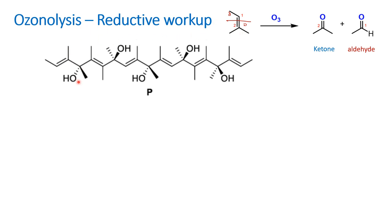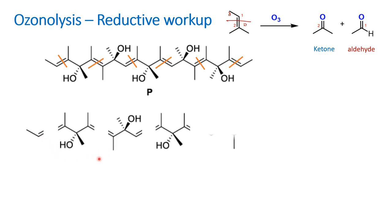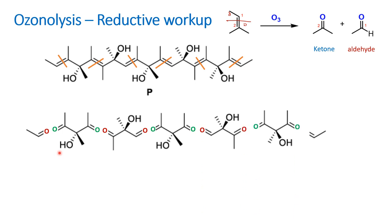Ozonolysis Reductive Workup breaks out ketone products. Here oxygen is inserted at each double bond position — oxygen is inserted again in all the double bonds. Very simple and straightforward. In all the double bond breaks, oxygen molecules are inserted. So in the first place, we have 7 molecule fragments.